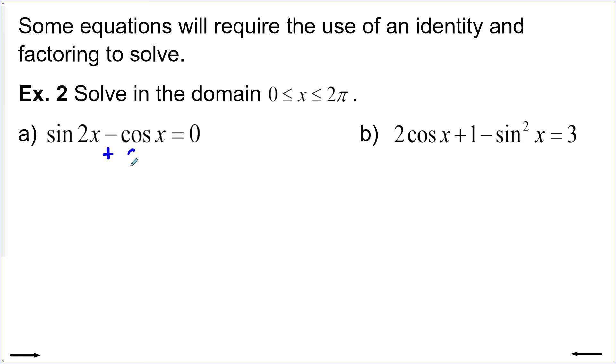If I just add cos x on both sides, then I get sine 2x is equal to cos x. And I don't actually know where to go from there. I suppose I could solve this one graphically. But if this was algebraically, I want a better method. And that would be using our identities.